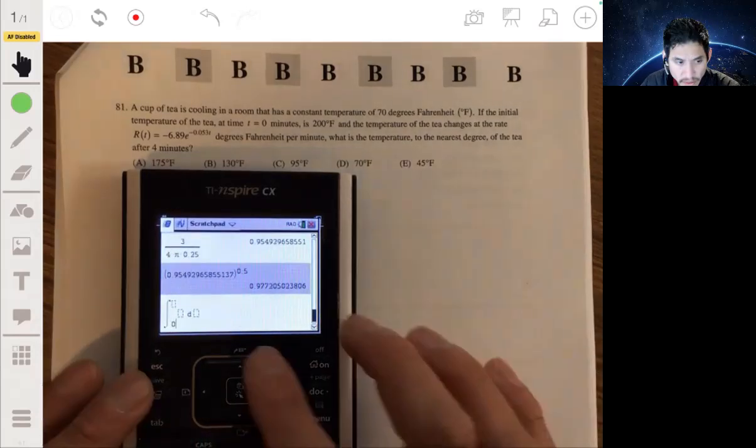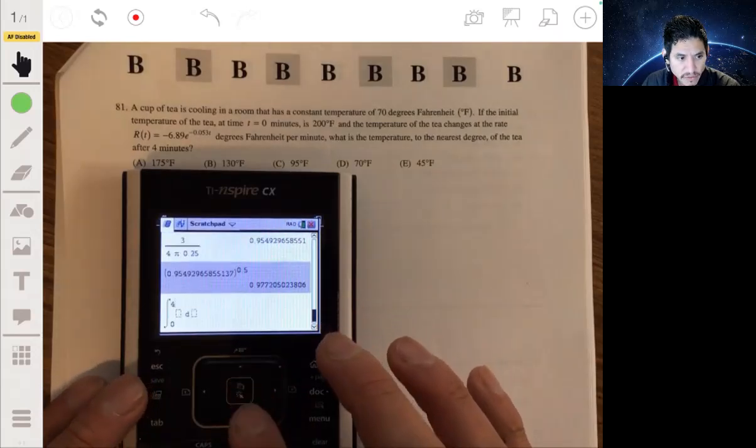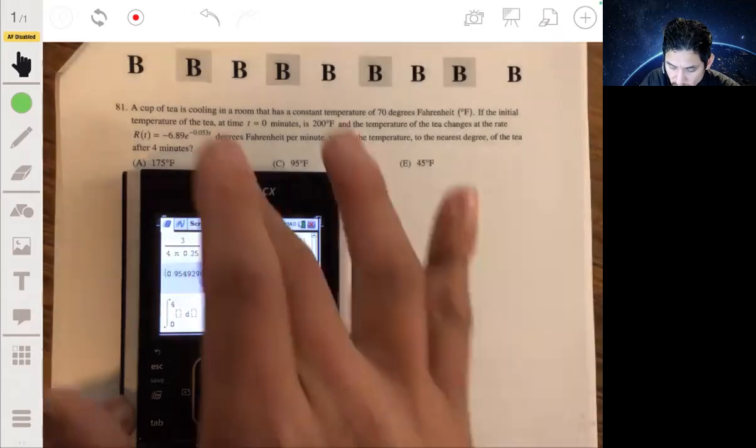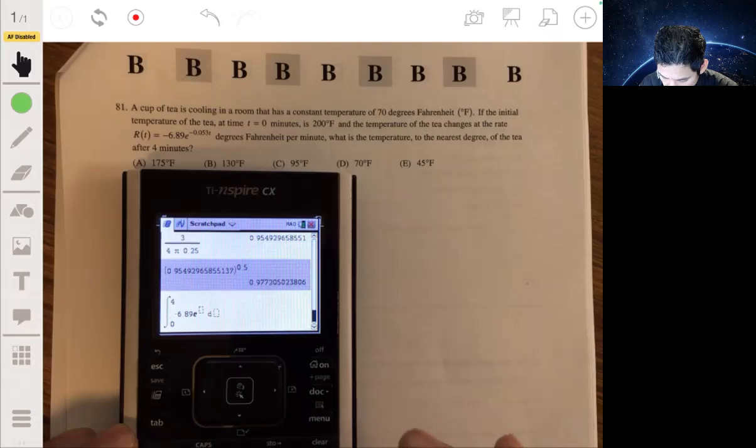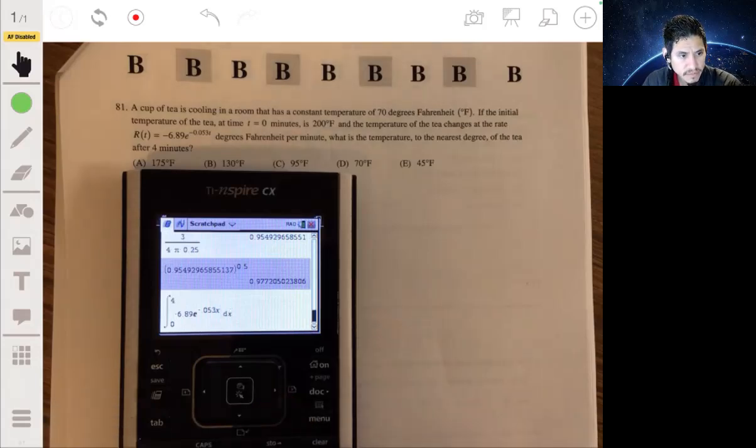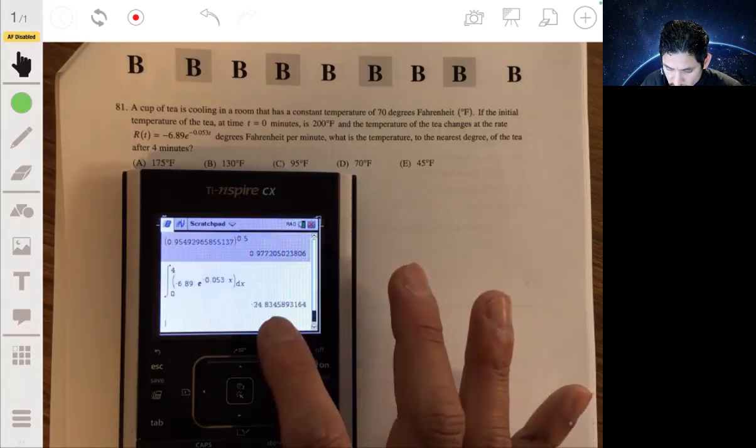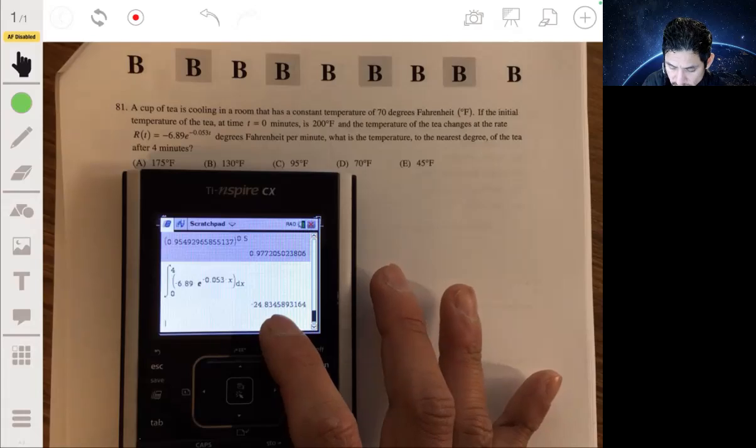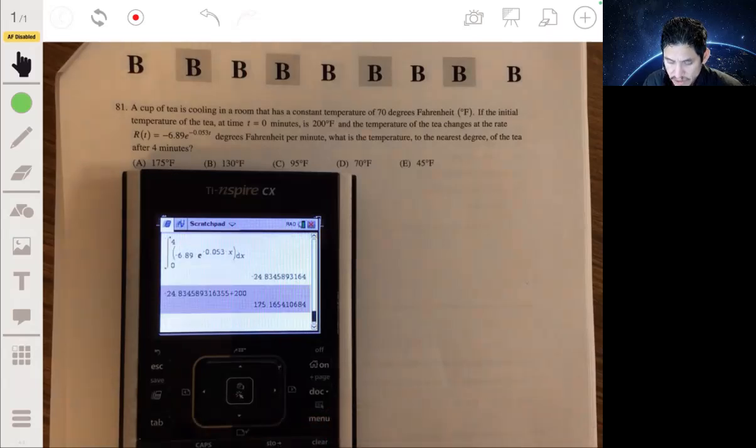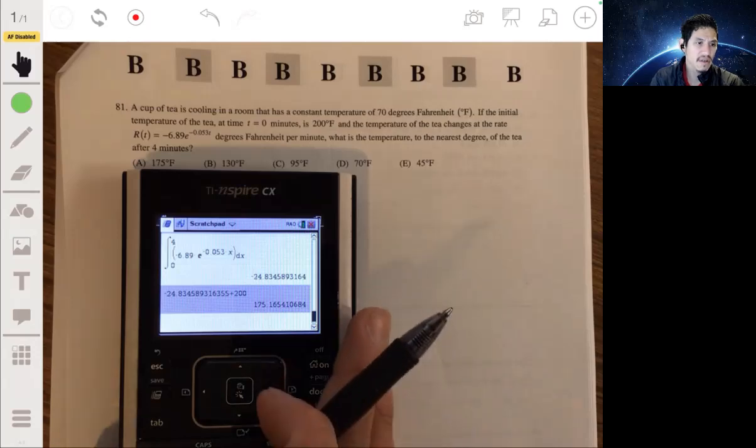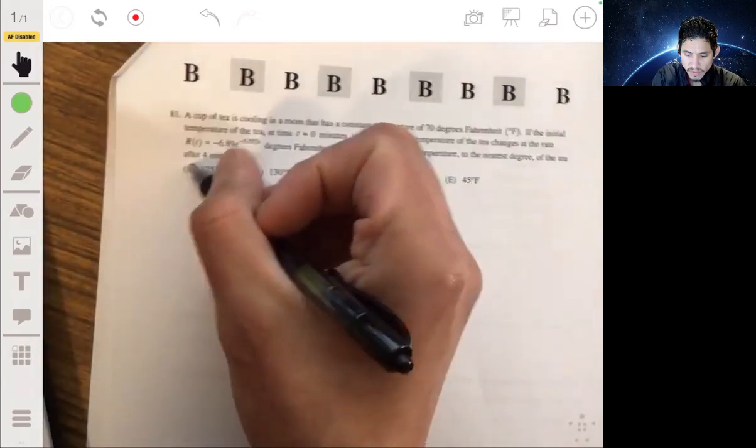We're going to use this function, integrate from zero to four. I'm typing the expression for r of t: negative 6.89 e to the negative 0.053 x dx. Let's add 200. It decreases about 24 degrees from 200, so it's going to end up at about 175 degrees Fahrenheit after four minutes. Our answer is 175.